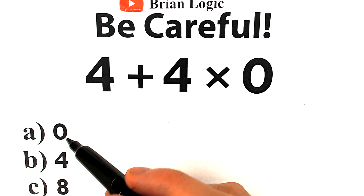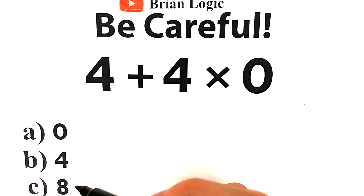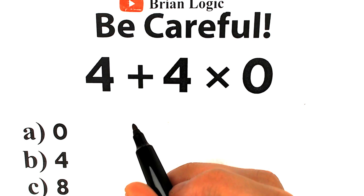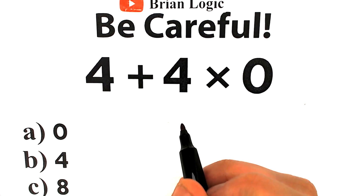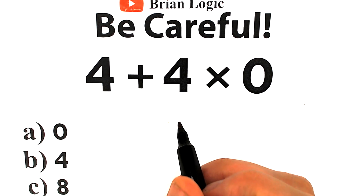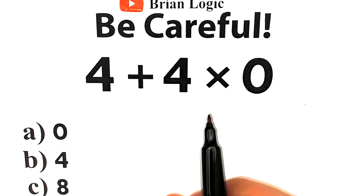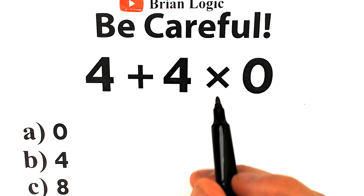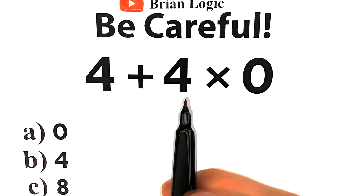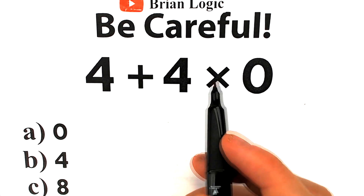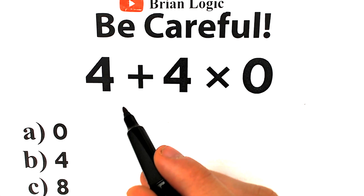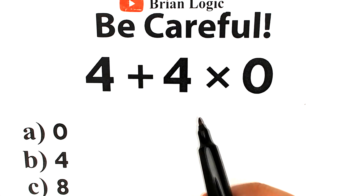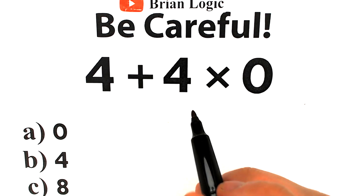We have three options: A, B, and C. Choose one option, what do you think is correct, and write your option down in the comment section. This is a very tricky challenge and I hope we'll solve this absolutely correctly. But a lot of students make this mistake — I'm going to show you this mistake in just 30 seconds, so it will be really interesting.